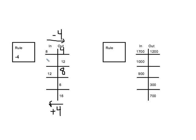12 plus 4 is 16. And 6 plus 4 is 10. And the last one, 16 plus 4 — notice these both have 6s in the ones place, so I'm guessing these will both have 0s in the ones place. 16 plus 4 is 20, and indeed it has a 0 in the ones place. Check your work — did you get 4, 16, 8, 10, and 20?